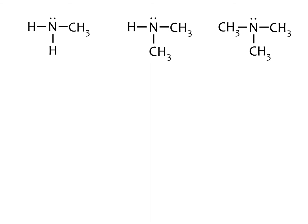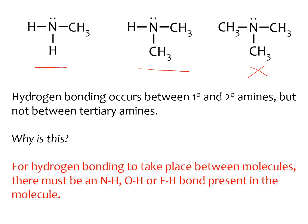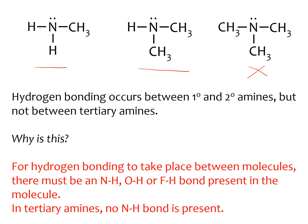Looking at the primary, secondary and tertiary amines again, we can think about hydrogen bonding and intermolecular forces. Hydrogen bonding occurs between the primary and the secondary amines, but won't occur between tertiary amine molecules. For hydrogen bonding to take place between molecules, there has to be an NH, OH or FH bond present in the molecule. In tertiary amines, there is no NH bond present, so we wouldn't get hydrogen bonding. Whereas we do have an NH bond in each of the primary and secondary amines, so we can have hydrogen bonding between those molecules.